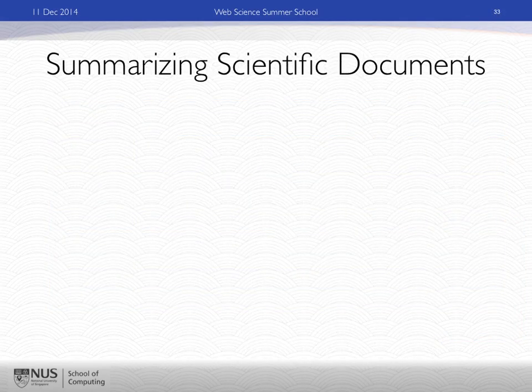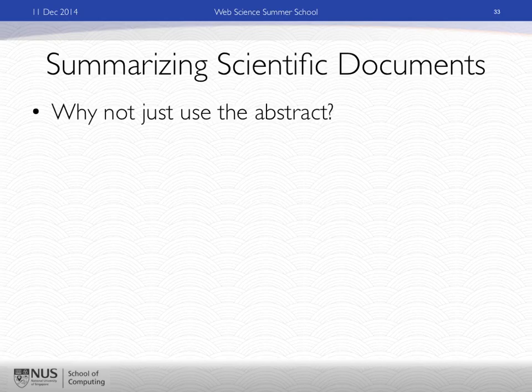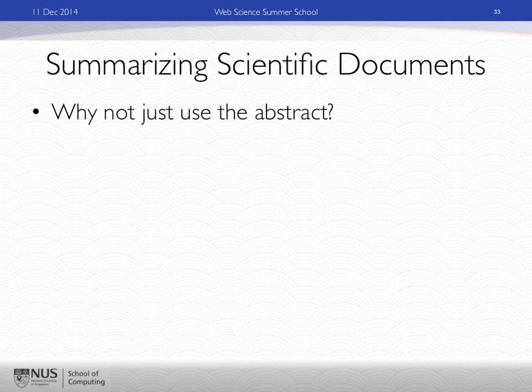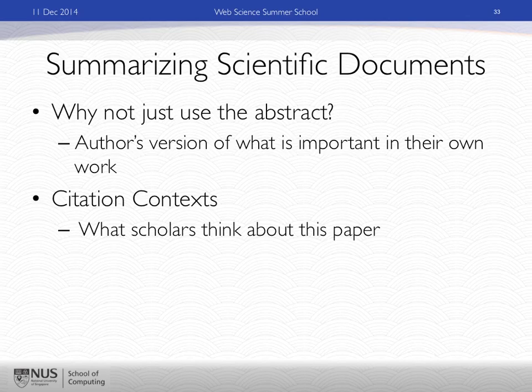The final topic I'll hint at is scientific document summarization. The abstract is not the only version of record — it's what people themselves think is important about a paper. But if you accumulate citations over time, you have another source: the citation sentences, the citation context. That's what the community as a whole thinks is important about the paper, and arguably it's more important than what the author thinks.